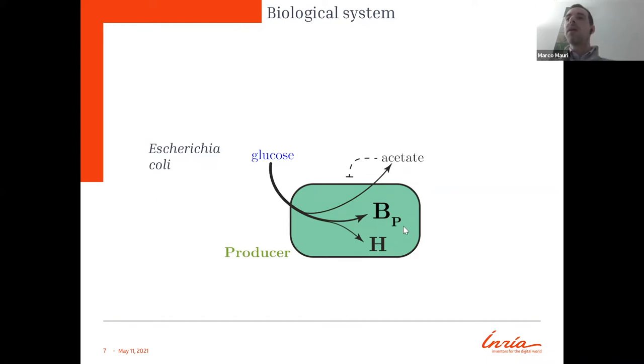So how can we sustain better the growth of this producer? The idea is to remove the acetate that impairs the growth, and we can do it by siding the producer with another engineered strain that we call the cleaner, that eats up more acetate, a little bit of glucose also, and detoxifies the environment so that the producer can produce more H protein.